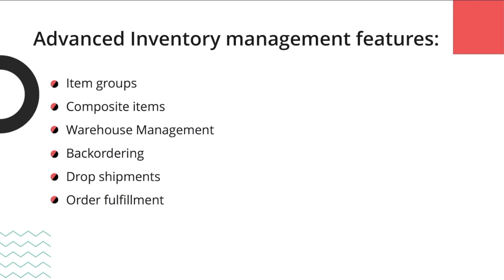Using Zoho Inventory, you can manage multiple warehouses and record transfer of stock between them. You can do backordering for orders that are out of stock, and drop shipments where you convert your sales orders into purchase orders, making your vendor directly deliver the goods and invoice directly to your customers. For order fulfillment, Zoho Inventory provides an option to integrate with 30-plus shipping carriers, allowing you to create packing slips and track your product delivery status within the Zoho Inventory platform itself.